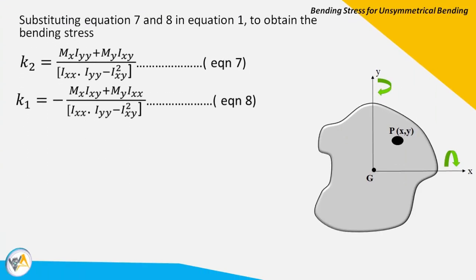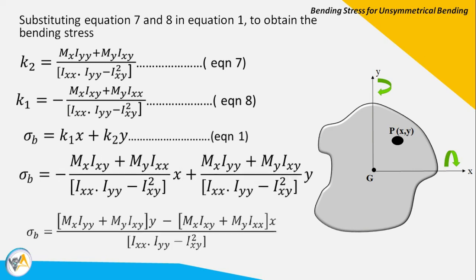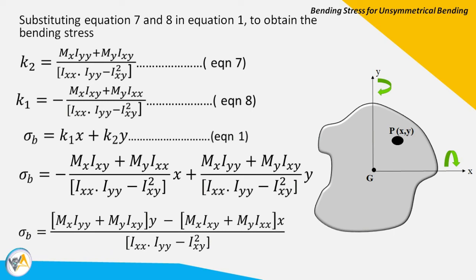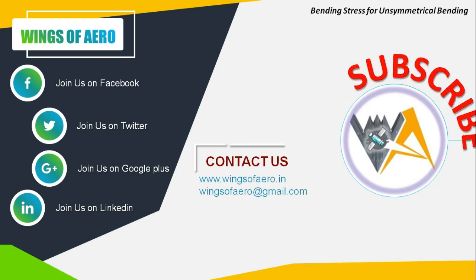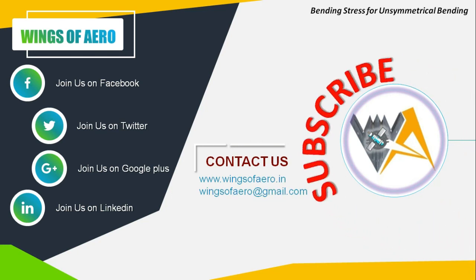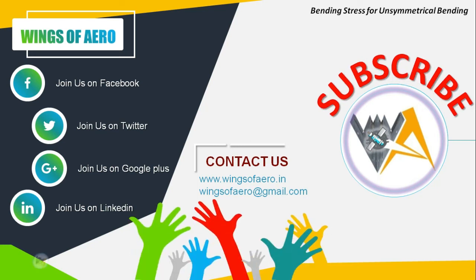Having obtained k1 and k2, we substitute back into equation one (σb = k1·x + k2·y). Rearranging, the final bending stress for an unsymmetrical section using the K method is: σb = [(Mx·Iyy + My·Ixy)·y − (Mx·Ixy + My·Ixx)·x] / (Ixx·Iyy − Ixy²). If you have further inquiries or video requests, drop a mail to wingsofaero@gmail.com. Don't forget to subscribe for more updates — take care, stay blessed, inspired, and fly high.